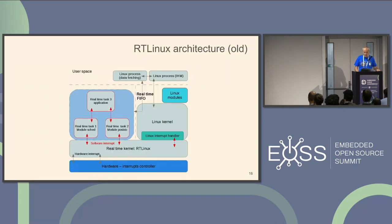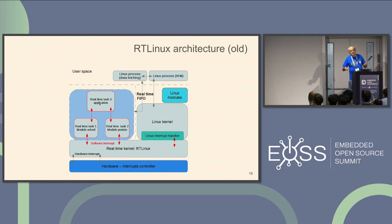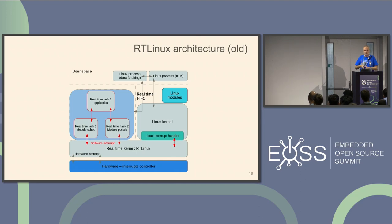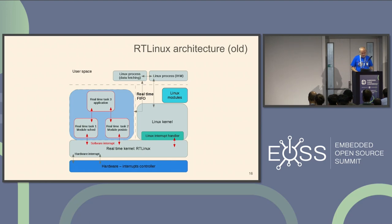That was the RT Linux architecture long time ago. You have the Linux kernel, the Linux interrupt handler, and then the RT interrupts go to the RT kernel. At that time, the application was a kernel module, which was a problem for the GPL. Most of the time in the industry, you have a real-time part and a user space with a GUI, or you want to save data or send it over the network. So you had to use a real-time FIFO to communicate between user space and kernel space.